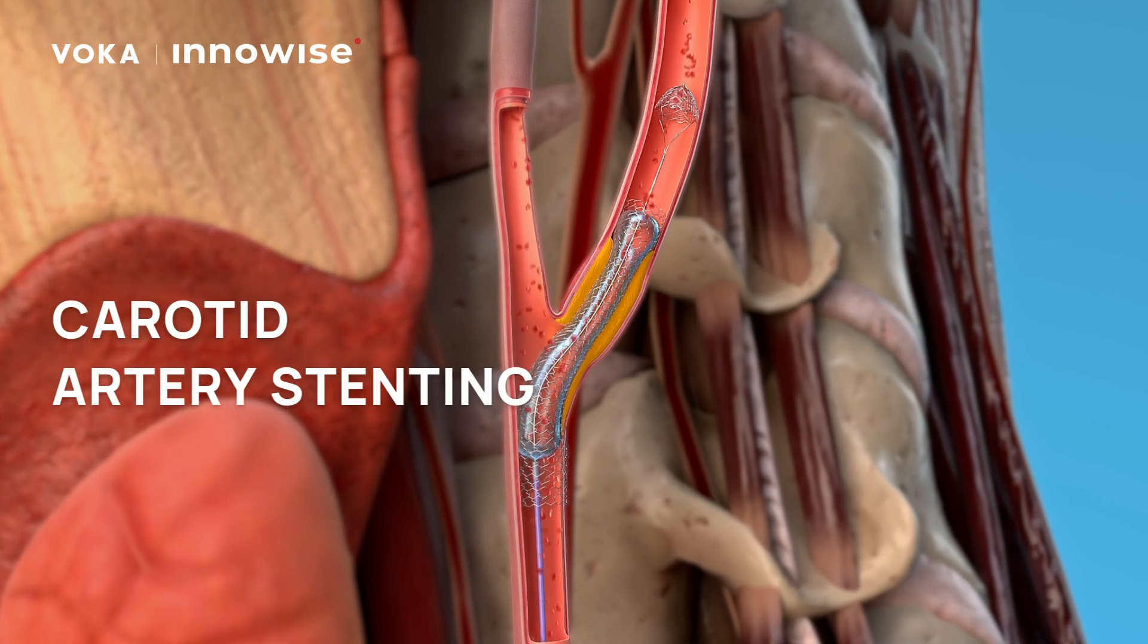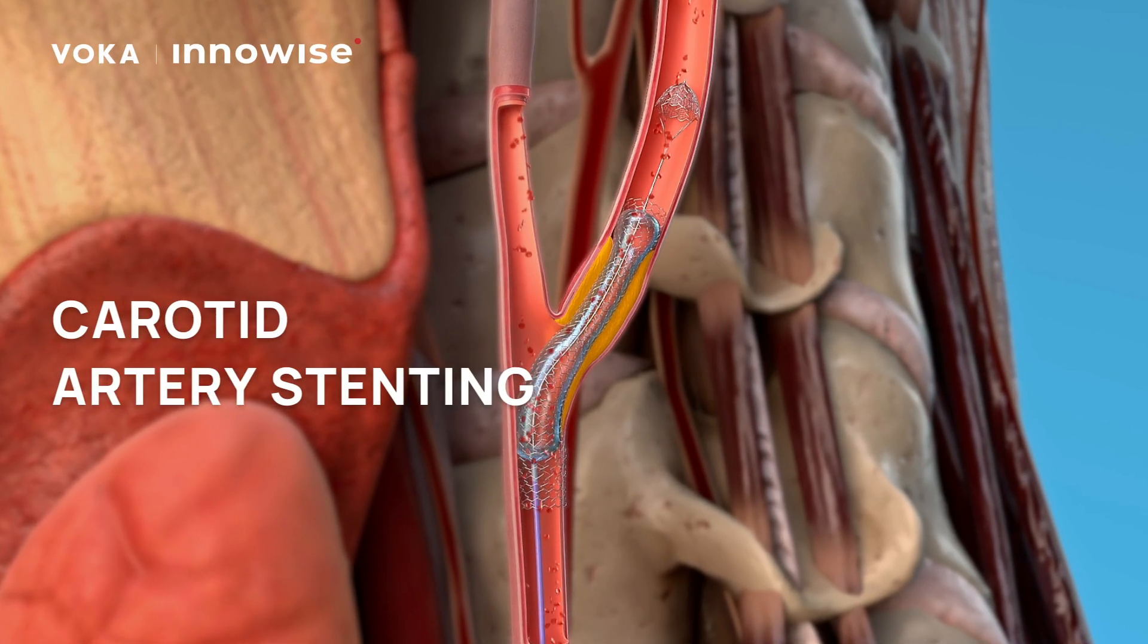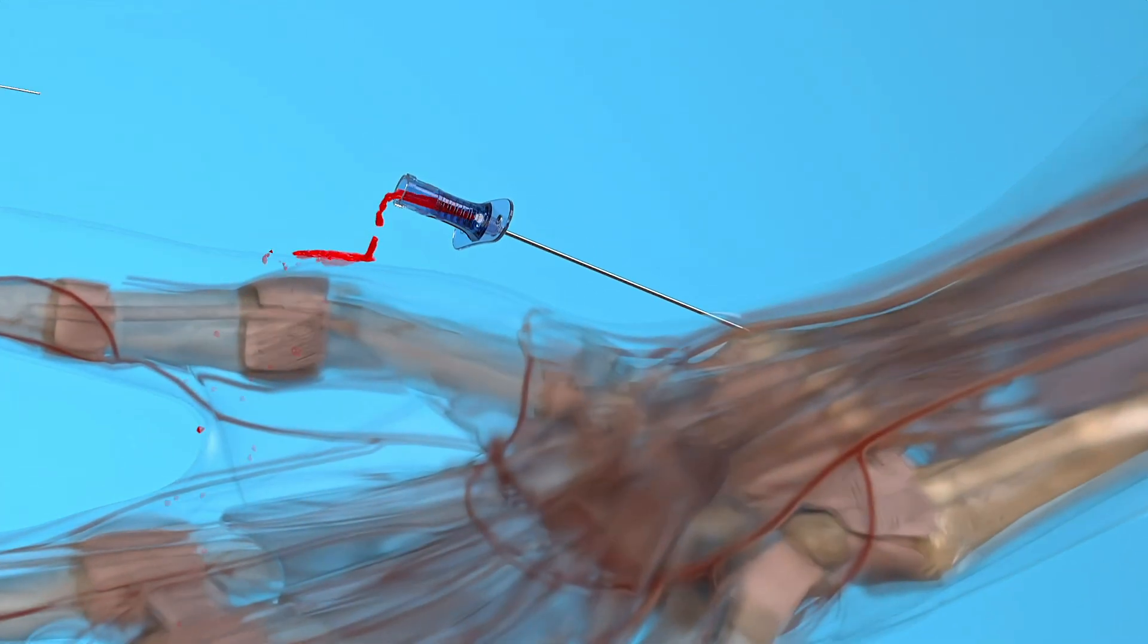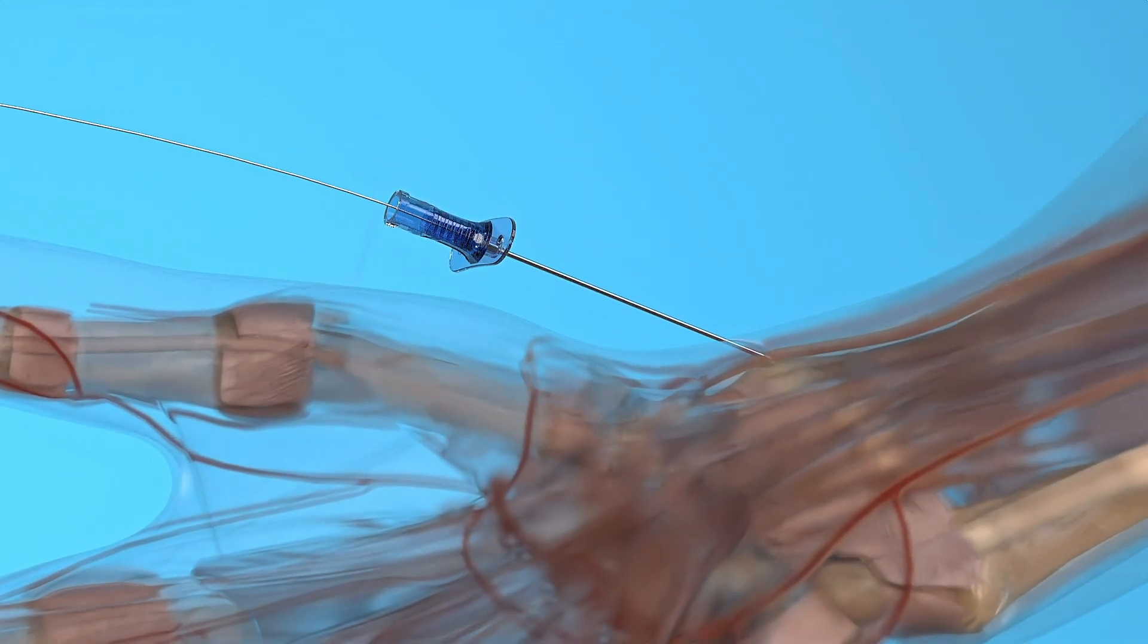An effective and minimally invasive method of treating atherosclerosis is the stenting of the internal carotid artery. The procedure can be performed through the radial or femoral artery.